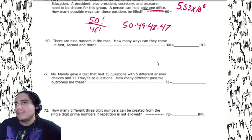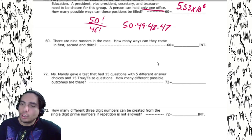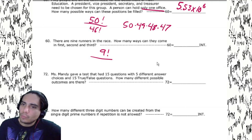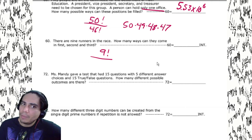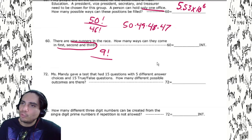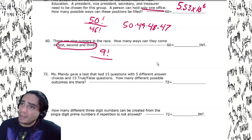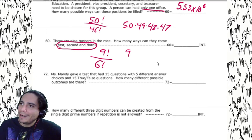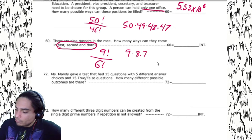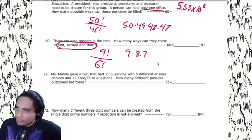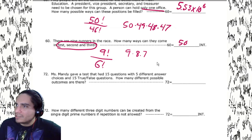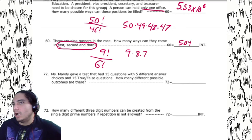Nine runners in a race — how many ways can they come in first, second, and third? Order matters. We've got nine choices selecting three: 9! / (9−3)! = 9! / 6!, which is 9 × 8 × 7 = 72 × 7 = 504.